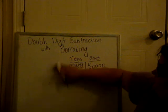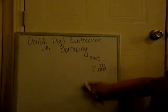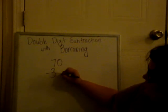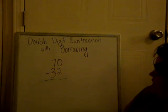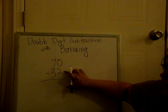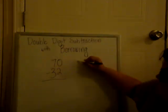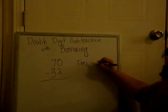So let's do another one. We'll get all of this erased. And let's do 70 minus 32. So now you start doing ones. 0 minus 2. We can't take 2 away from 0, so we're going to have to use borrowing. So we'll do it again. Tens and ones.